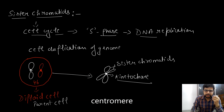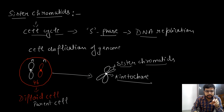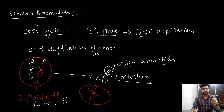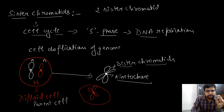Sister chromatids means the two are identical — the same number of chromosomes and the same number of gene segments are present in both chromosomes. Together they are known as sister chromatids. We can mark each one as N and N. A similar case applies for the other chromosome shown in red. Sister chromatids are the product of DNA replication — there are two sister chromatids per replication.